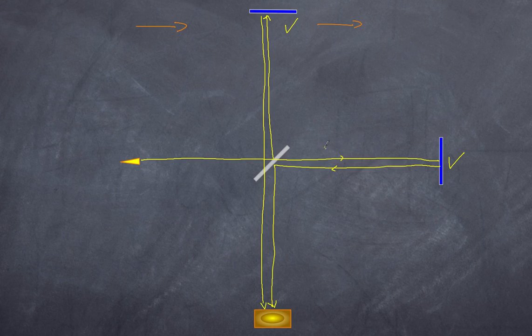So therefore, the speed at which this light travels in this direction is equal to C plus V. And the speed as it returns is also the combination of C and V. But in this case, it's C minus V.